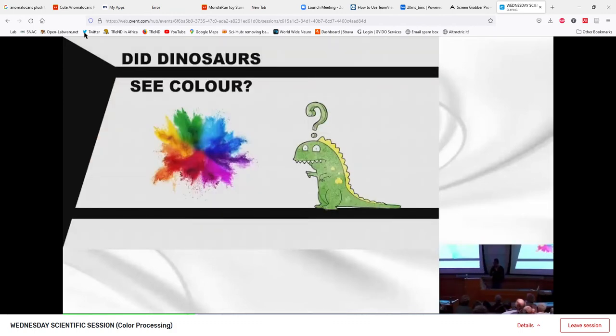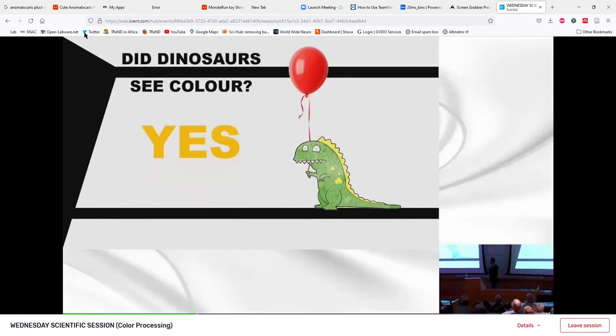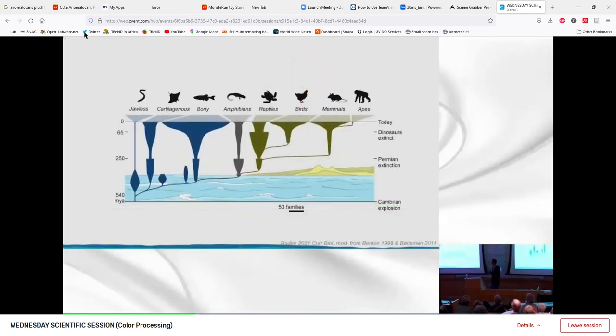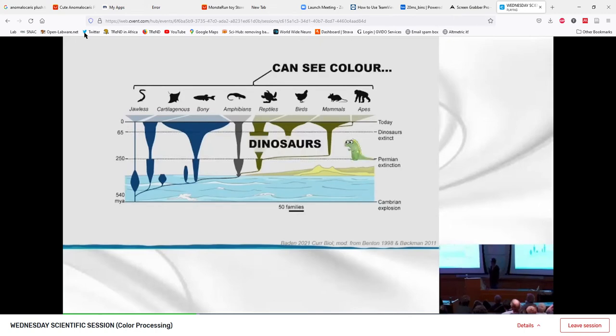So with this, let me jump to the question that you've all traveled here to get addressed. Did dinosaurs see color? And yes they did. Why so sure?